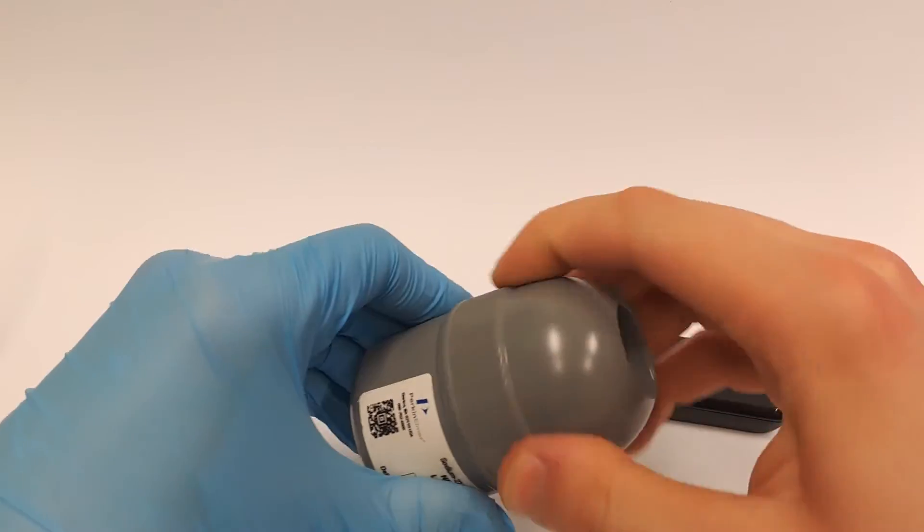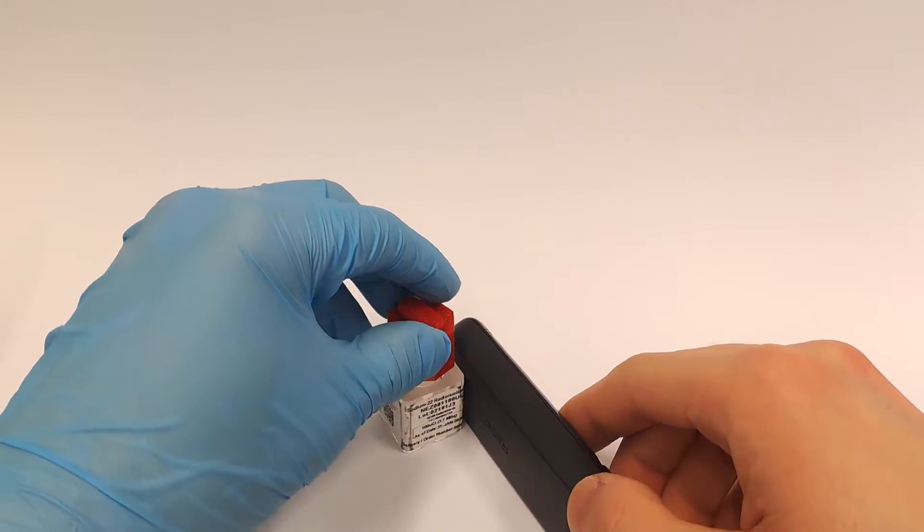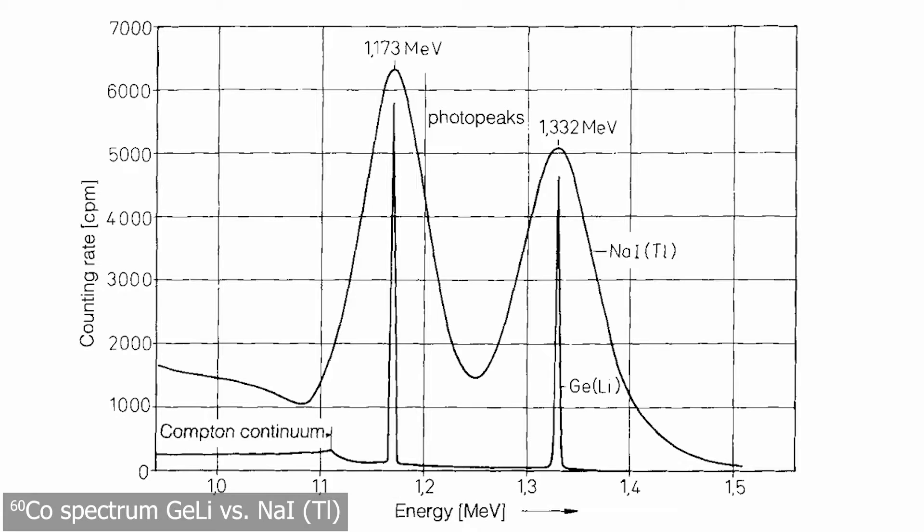Now onto the gamma spectrum. Here we are comparing our semiconductor with a scintillation counter. The advantage here is that the scintillation detector has a lower dead time. On the other hand, the channel resolution of the semiconductor detector is better.